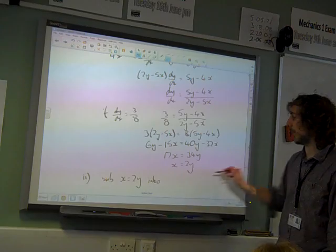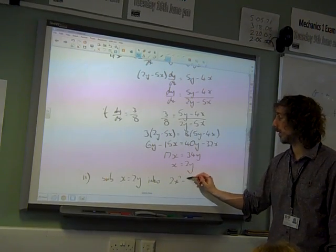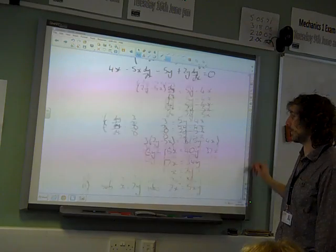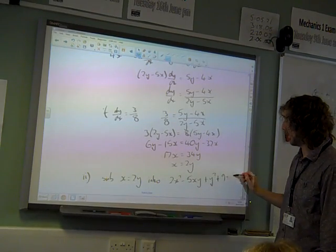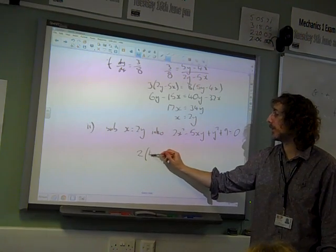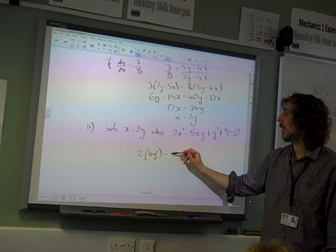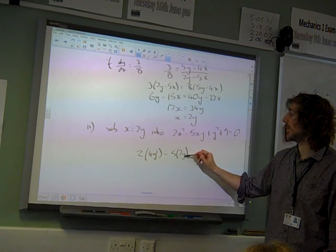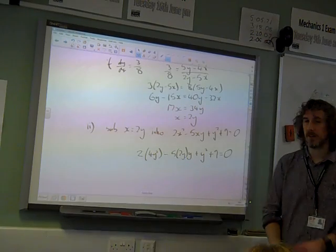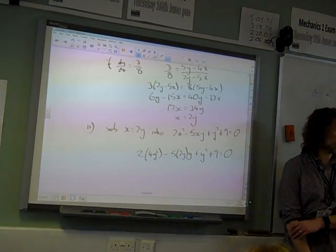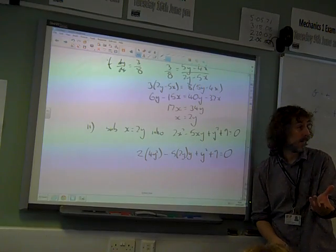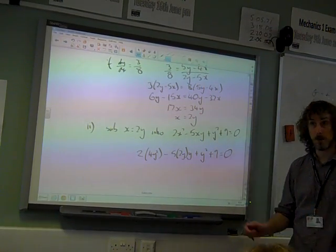The original equation was 2x squared minus 5xy plus y squared plus 9 equals 0. Substituting gives 2 times 4y squared minus 5 times 2y times y plus y squared plus 9 equals 0. I'll solve for y first, then get the x values. I'm expecting two y values for points P and Q.